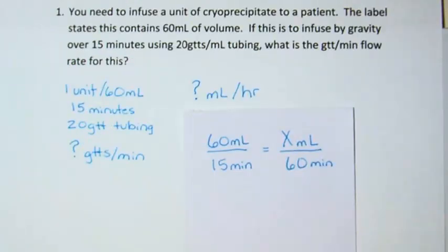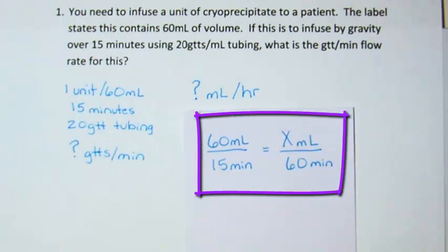To answer the question of milliliter per hour flow rate first, we must put this into a ratio and proportion problem. In order to do this, our labels must match. So because we are looking for an hour flow rate, we have to base that on the equivalent of an hour in minutes. This shows the proper setup, which is 60 milliliters to infuse over 15 minutes, solving for x milliliters 60 minutes, or the equivalent of a milliliter an hour.